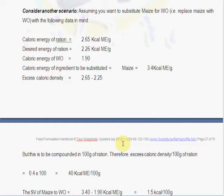Starting here with the maize and wheat offal where we're trying to reduce the energy content of the ration. The caloric energy of the ration is 2.65, that's the actual value, but the desired energy is 2.26. The wheat offal has 1.9 which we already know from the previous example. The energy of the ingredient which is going to be substituted is 3.4 and that's maize.